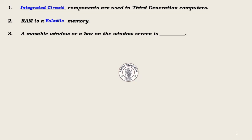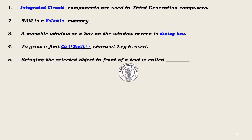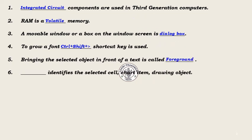Question 3: A movable window or a box on the window screen is dash. Answer: Dialog box. Question 4: To grow a font, dash shortcut key is used. Answer: Ctrl + Shift + greater than symbol. Question 5: Bringing the selected object in front of a text is called dash. Answer: Foreground.